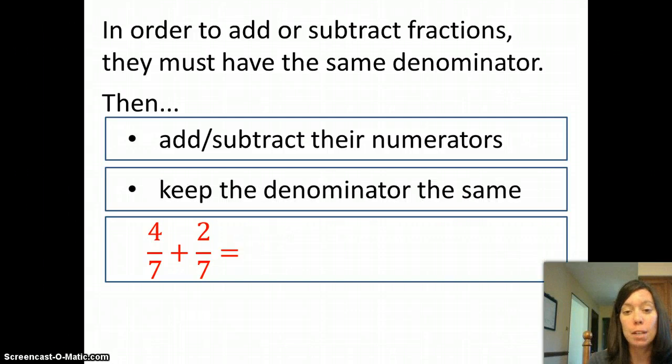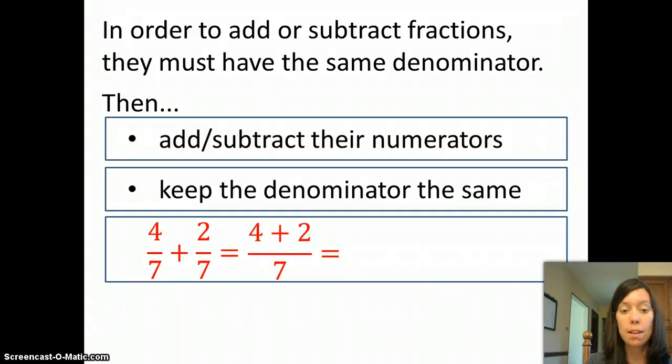And then you'll keep the same denominator, whatever the denominator already is. So if we want to add 4/7 plus 2/7, we just add together the 4 and the 2. We keep the 7 on the bottom, so the answer is 6/7.